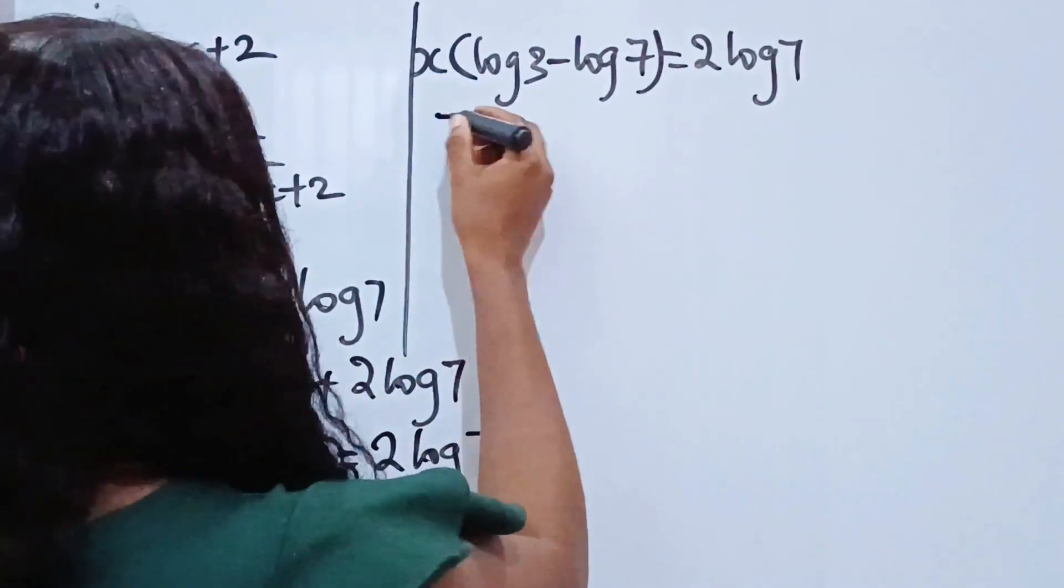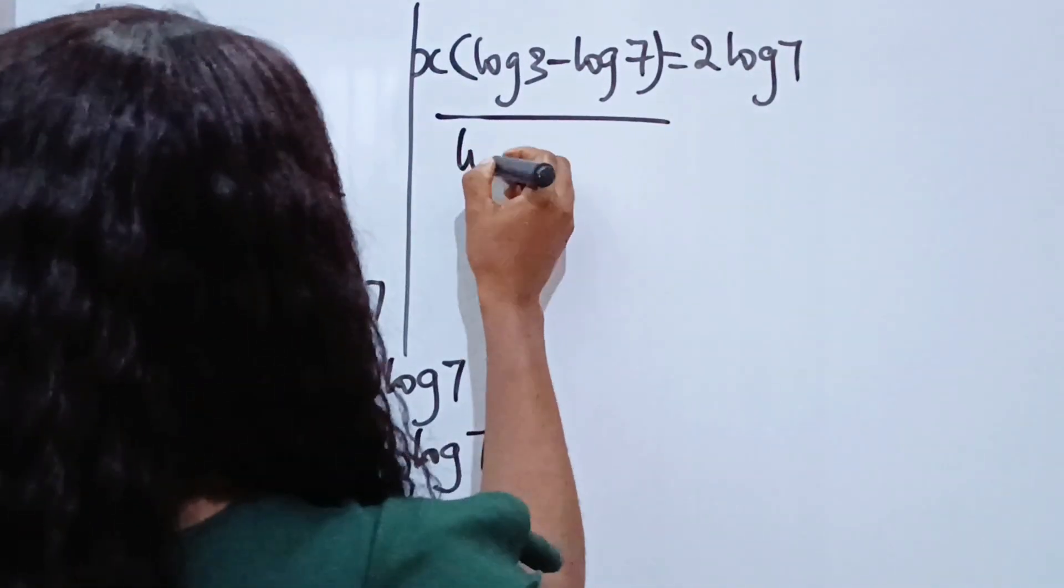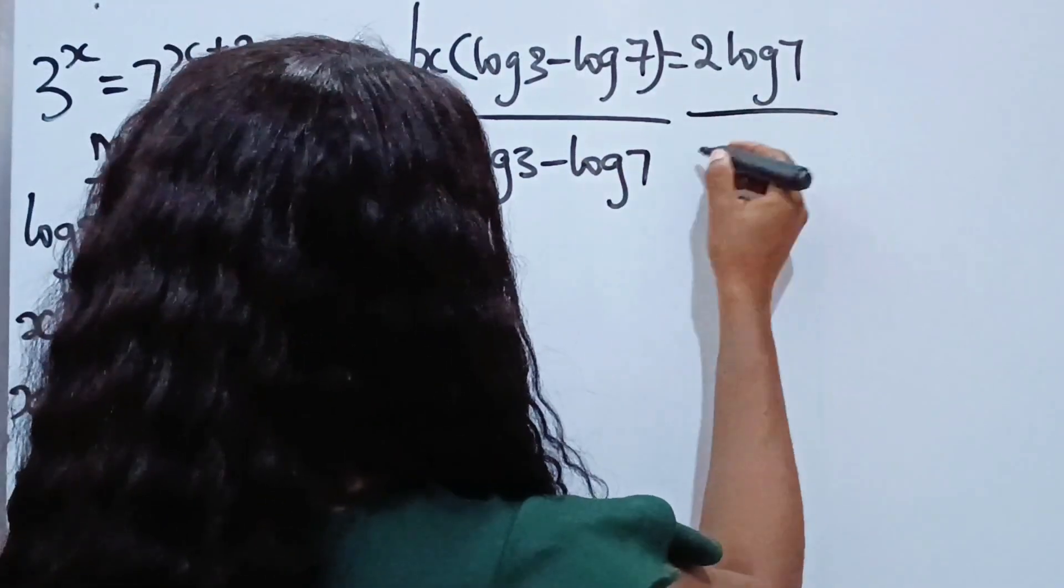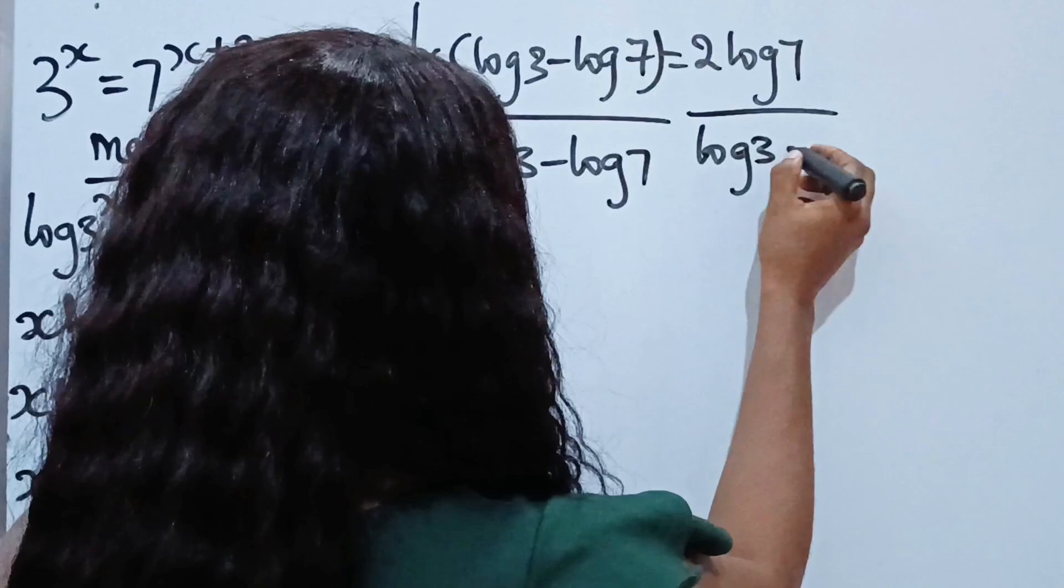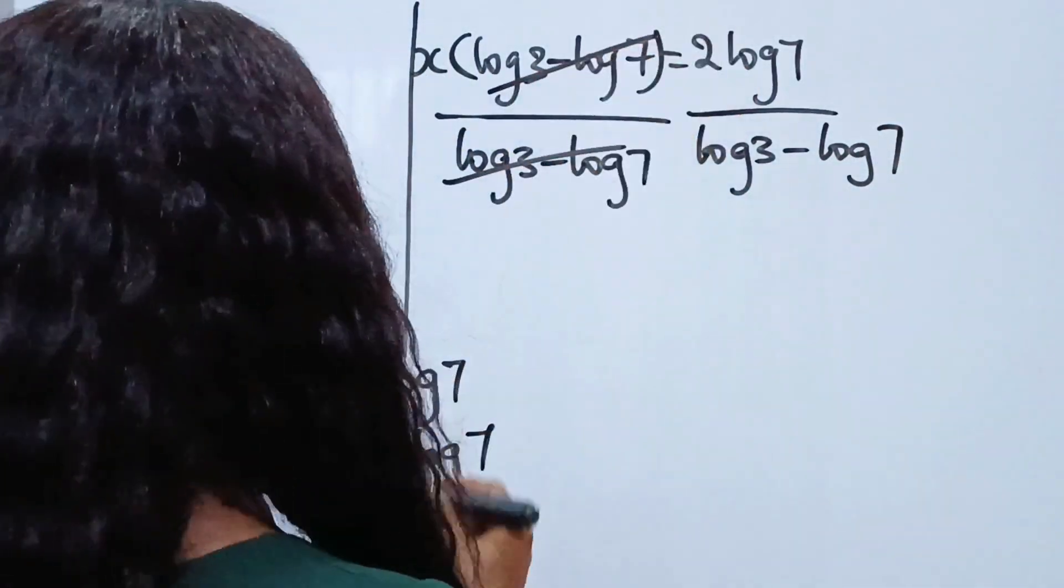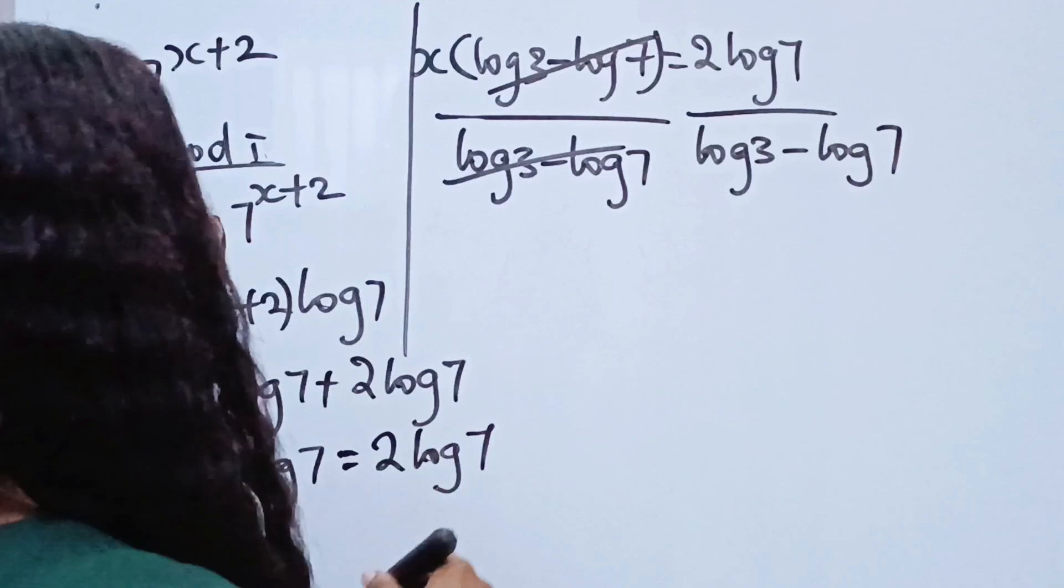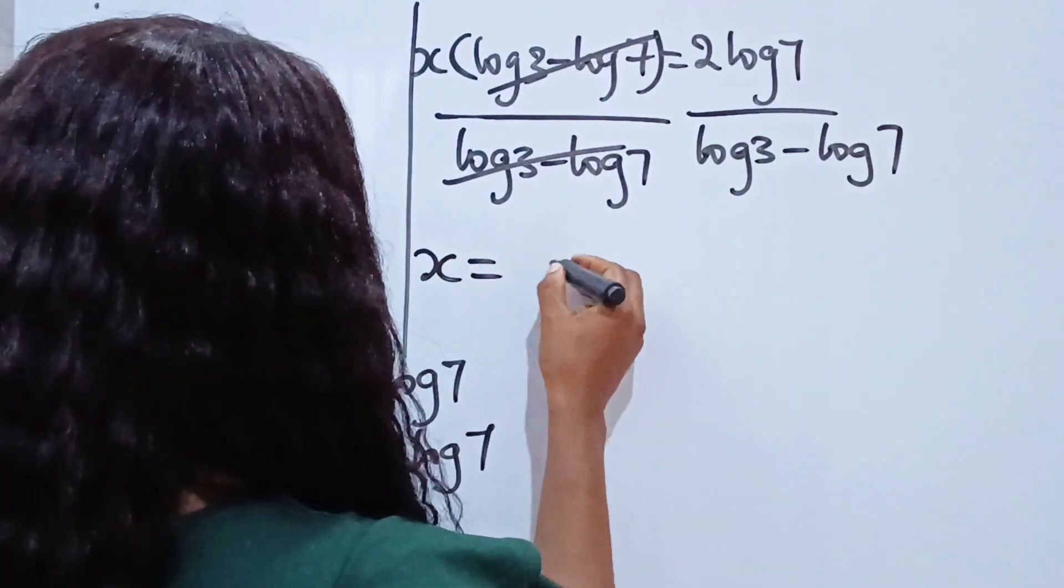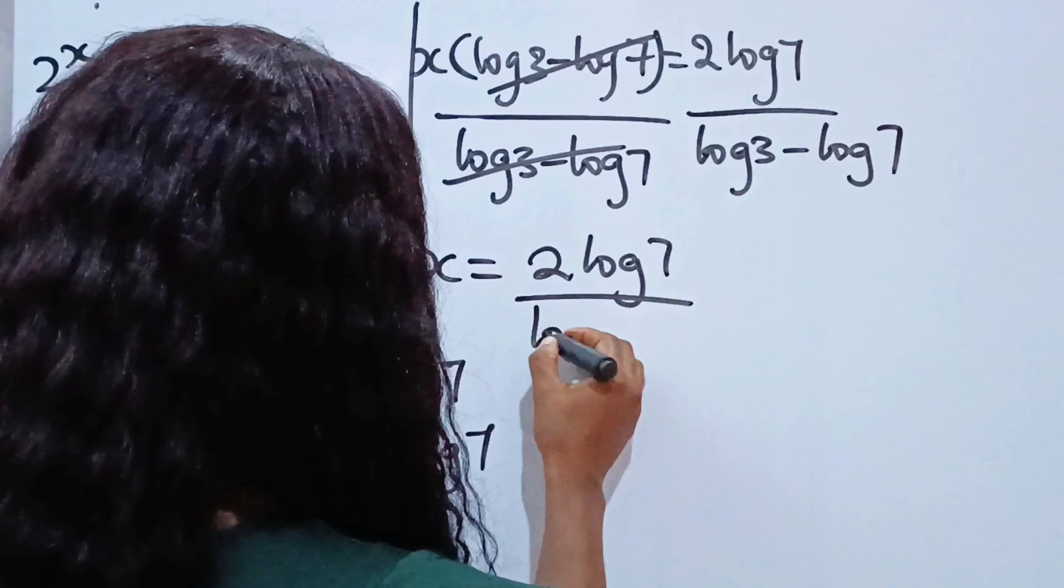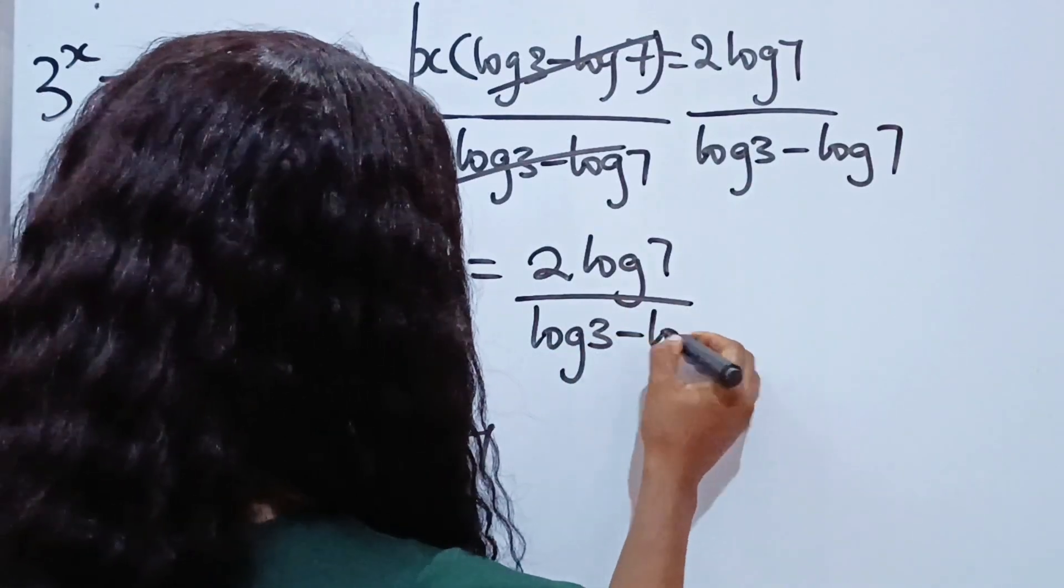Now to get the value of x, let's divide. So we are going to divide this side by log 3 minus log 7, and we are also going to divide this side by log 3 minus log 7. So this is going to cancel this, and we have that x equals 2 log 7 divided by log 3 minus log 7.